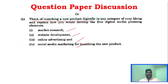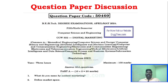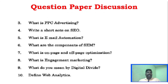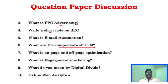Now we will look at the April May 2024 question paper. Questions are almost the same: what do you mean by content marketing, define market space, what does PPC advertising mean, write short notes on SEO, email automation, components of SEM, on-page and off-page optimization, engagement marketing, digital divide, and web analytics.